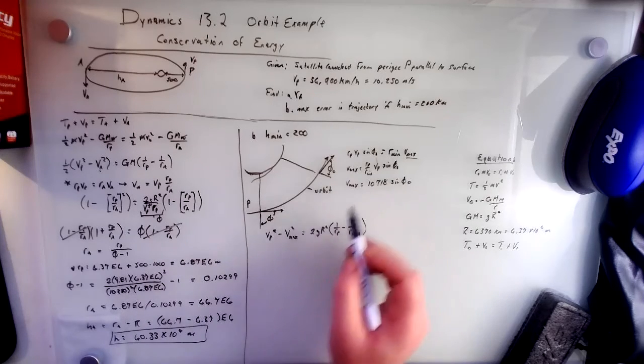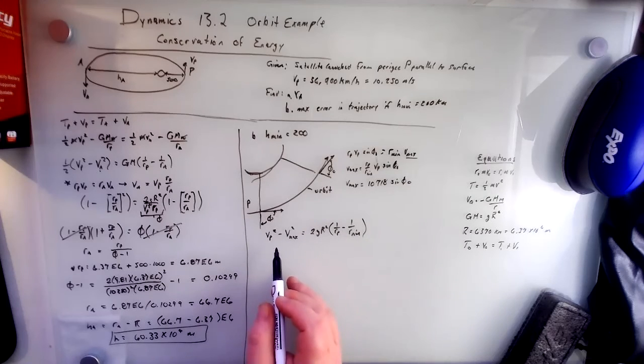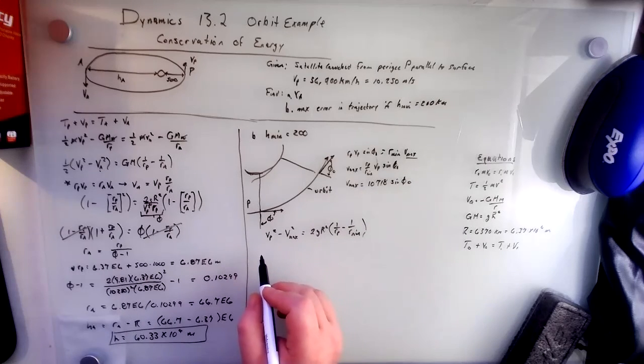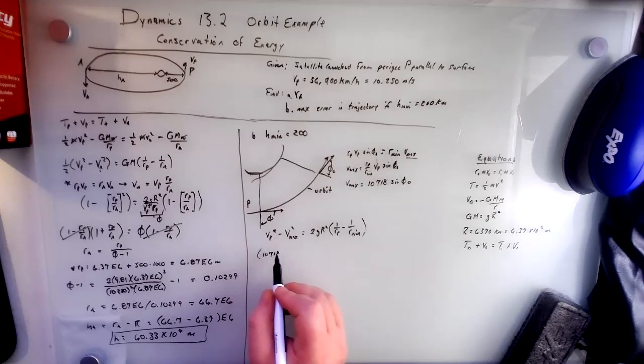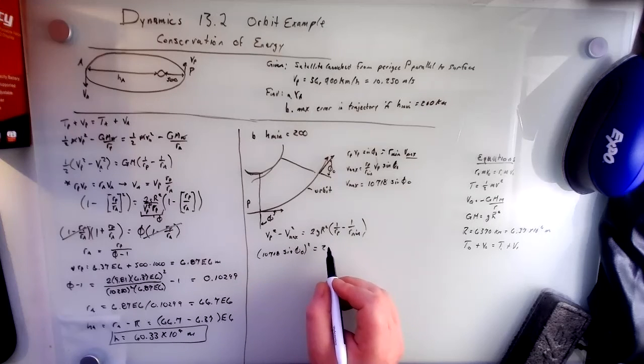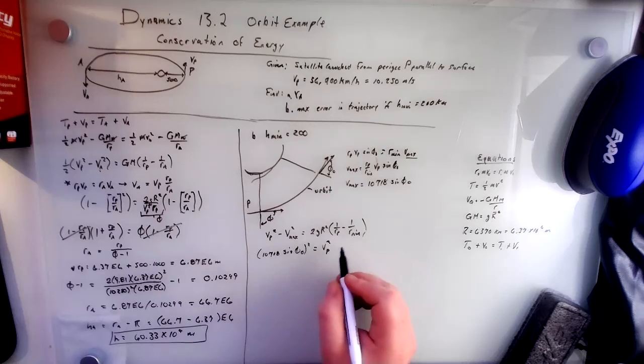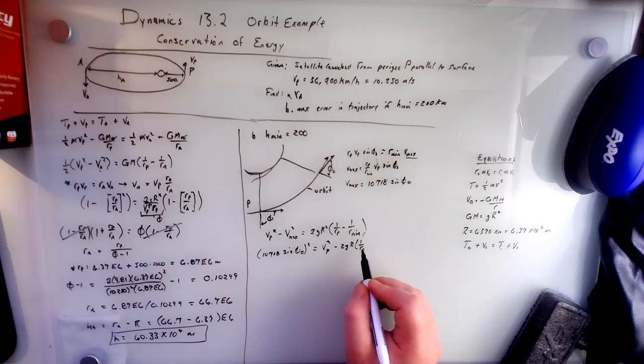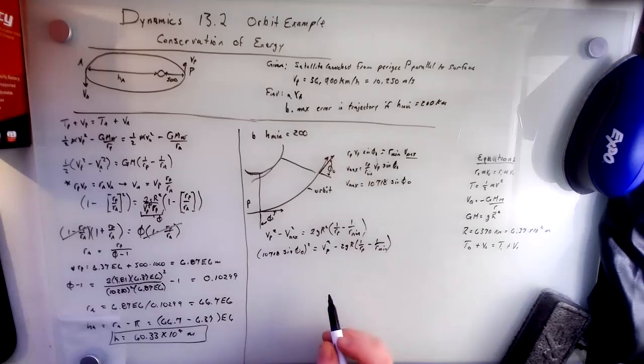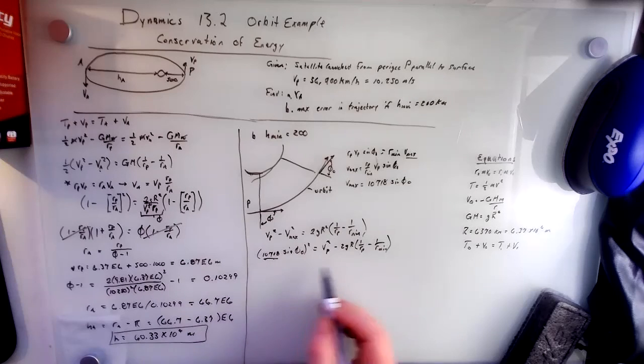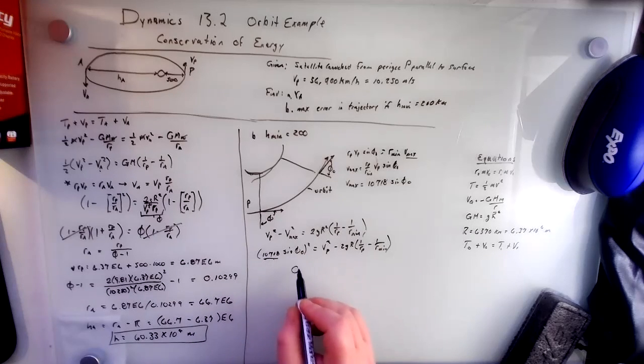So vP squared minus V max squared equals 2GR squared times one over RP minus one over R min. And we're going to substitute the V max we got for this V max and do some algebra. So we get 10718 sine theta squared equals vP squared minus 2GR times one over RP minus one over R min.